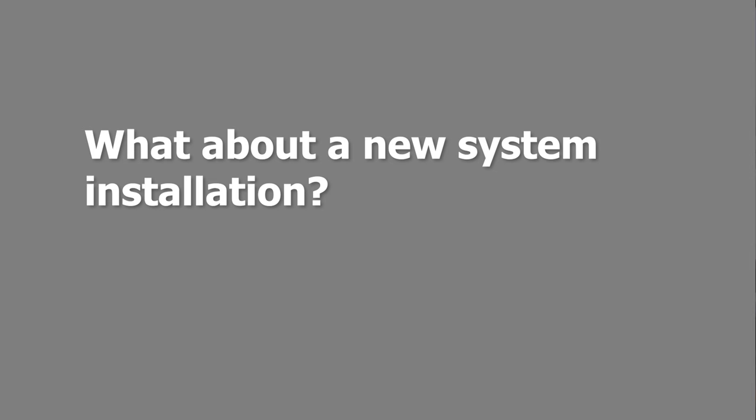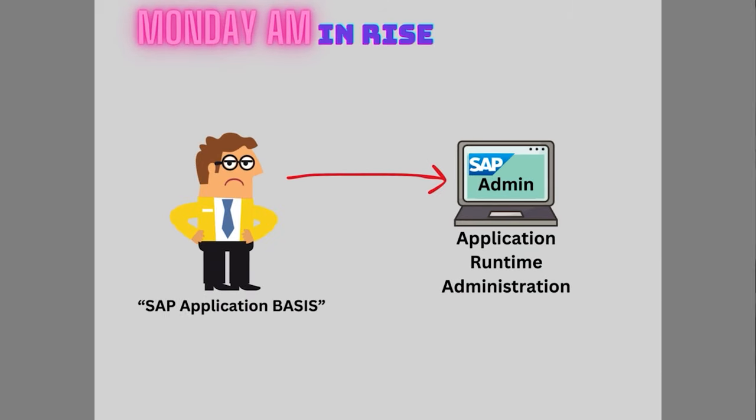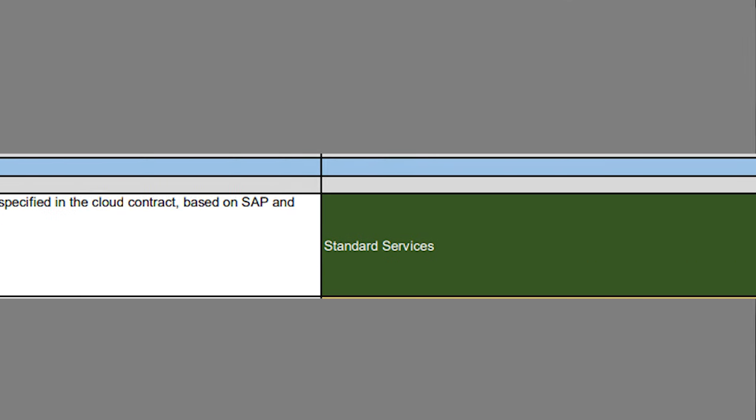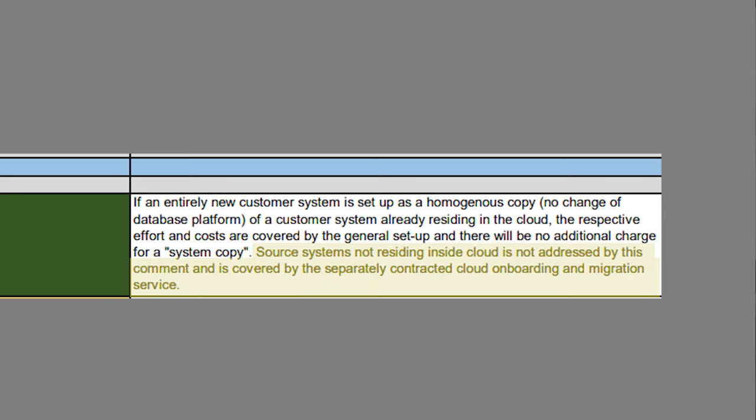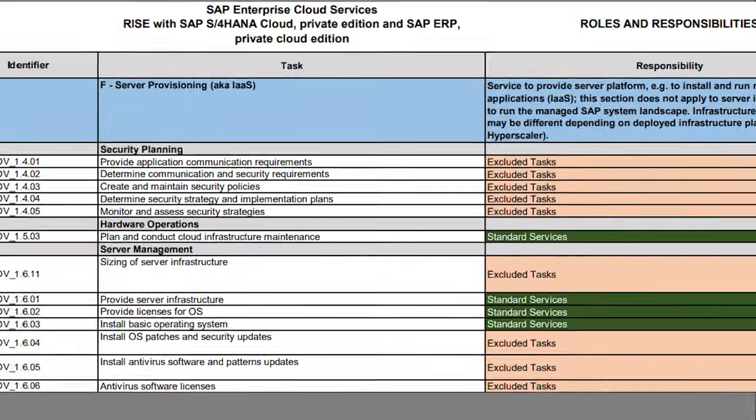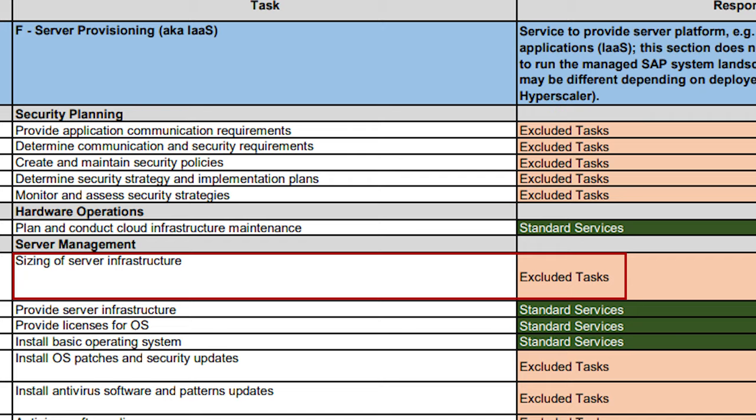What about a new system installation and landscape? This is where some customers may get caught out. The customer will need to provide and sign off on the infrastructure sizings. If our typical Basis administrator now only performs application runtime technical administration, the customer may be thinking they no longer need infrastructure knowledge. Yet the roles and responsibilities document from SAP clearly states that sizing of new systems and landscapes, especially non-SAP, is done by the customer. It's the same if a non-SAP application is requested to be set up — SAP will do the actual work, but it will need to be technically designed and sized by the customer.